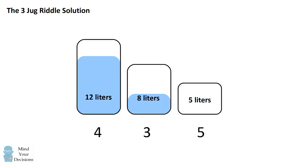We'll take that 5-liter amount and put it back into the 12-liter container. So we have 4 plus 5, which makes 9.